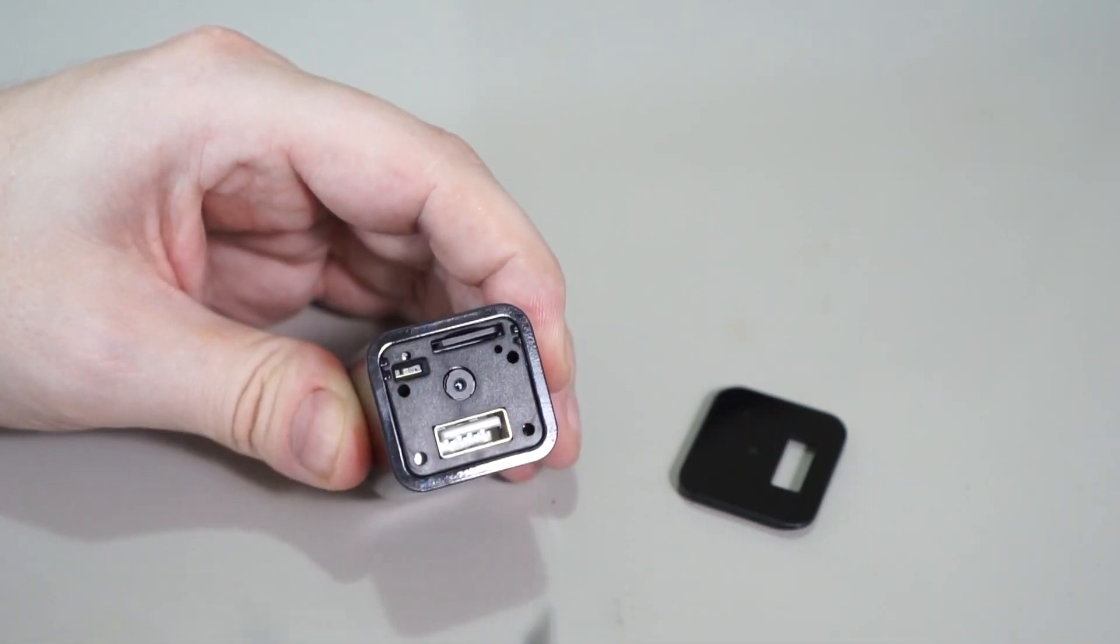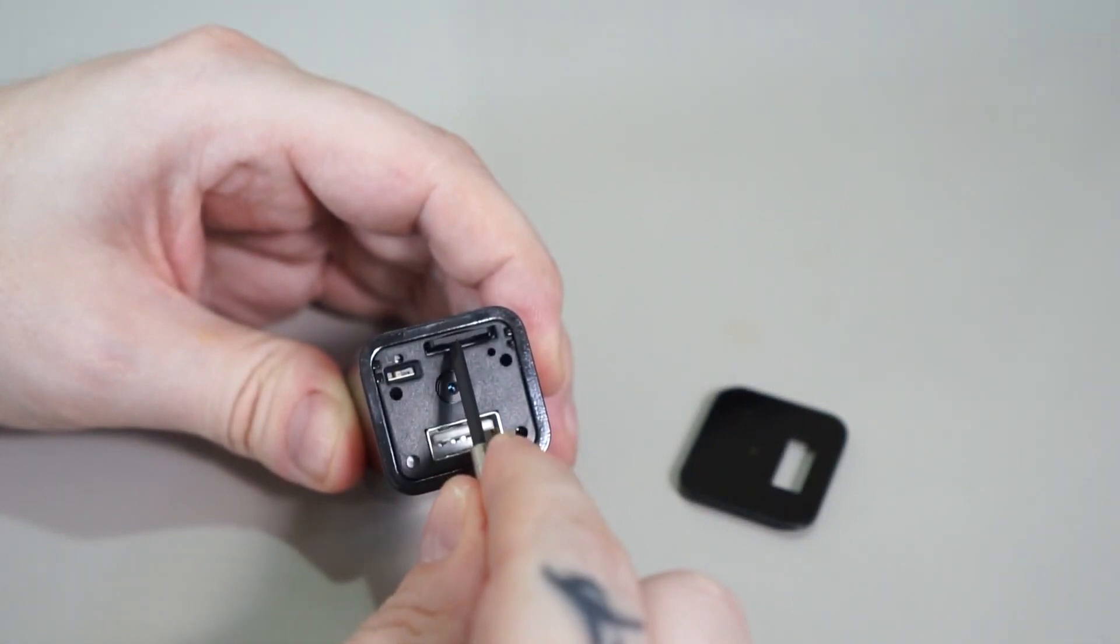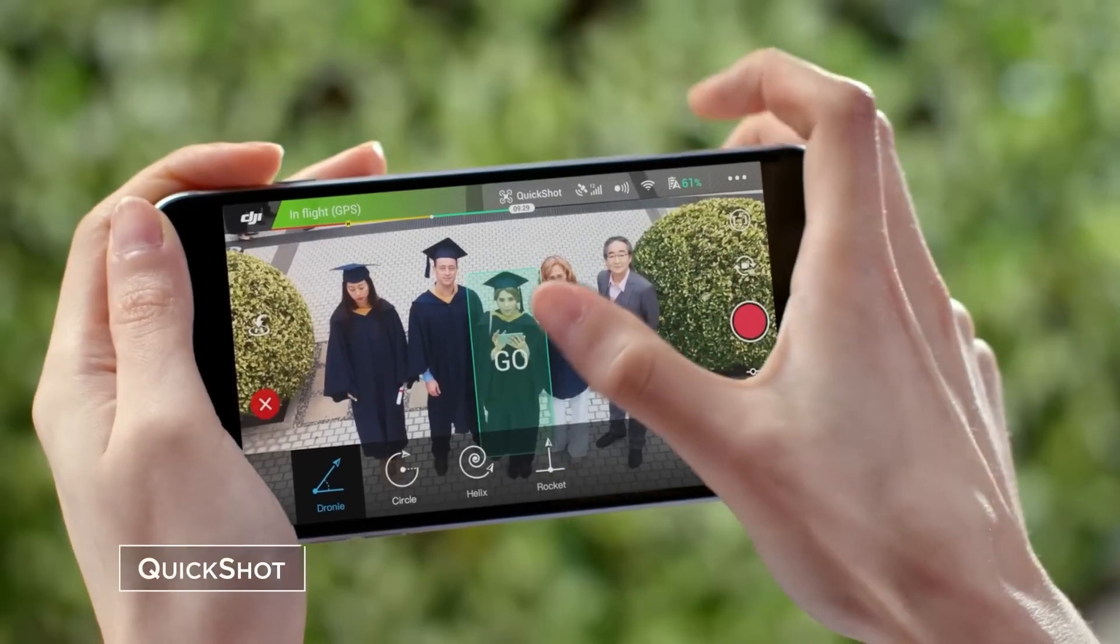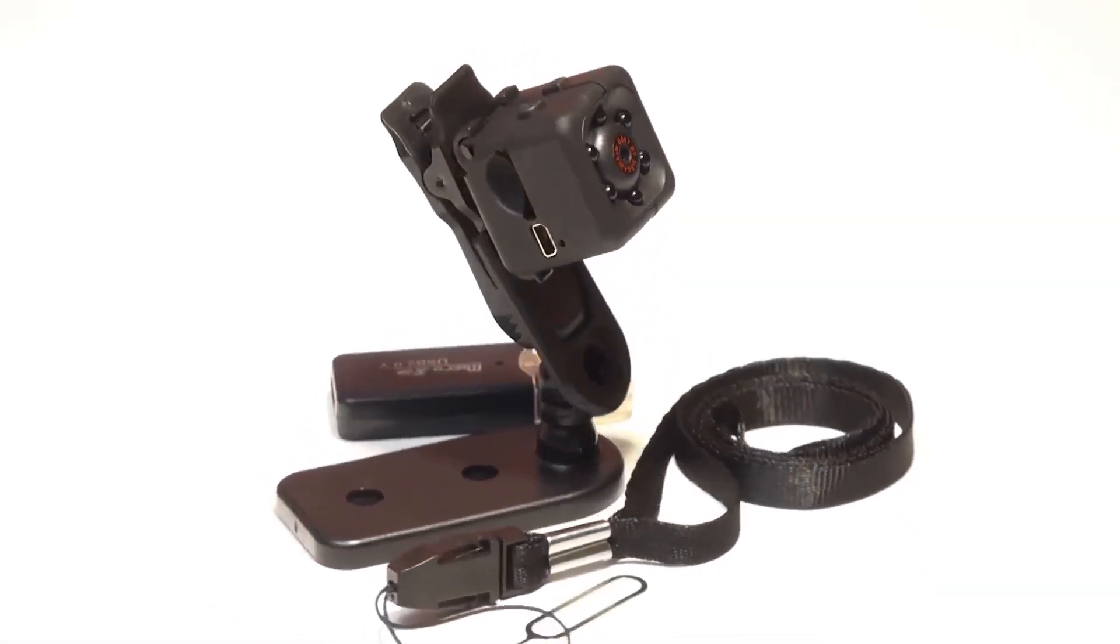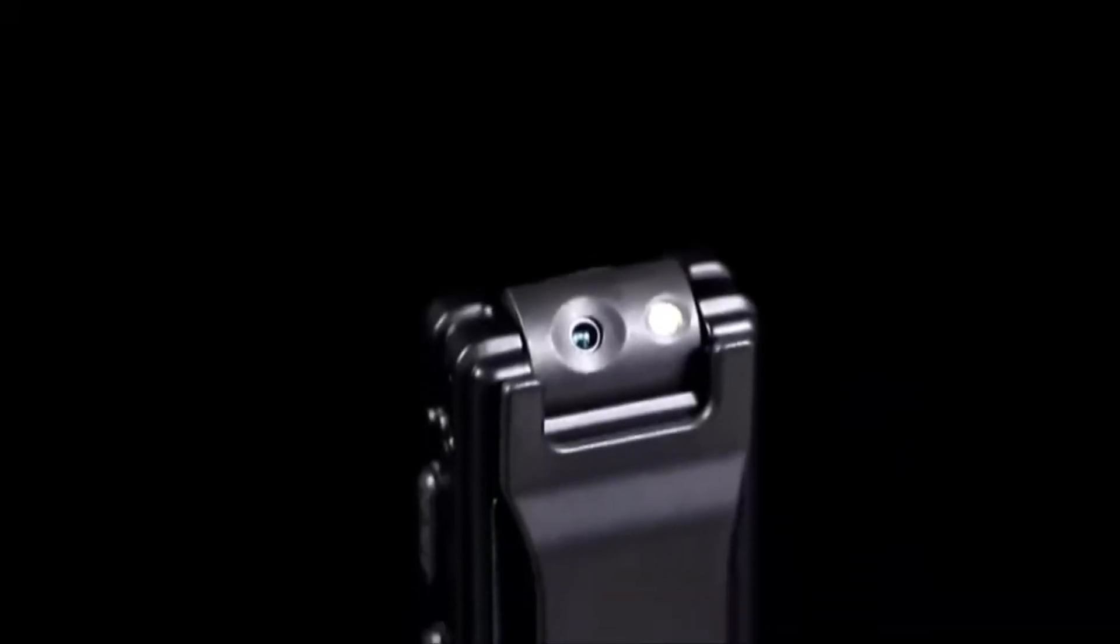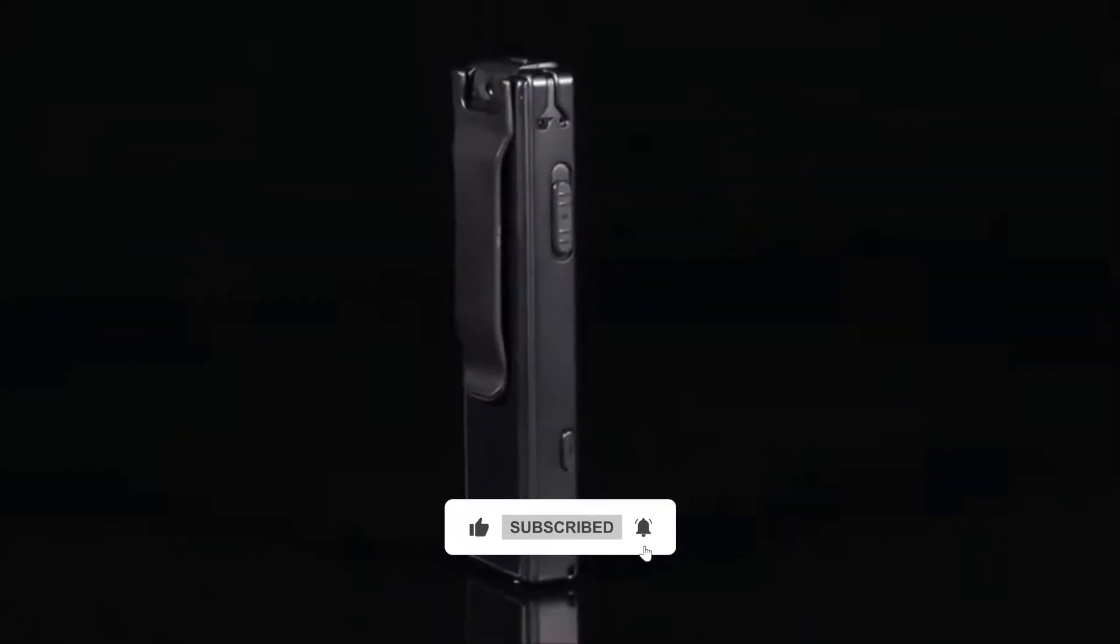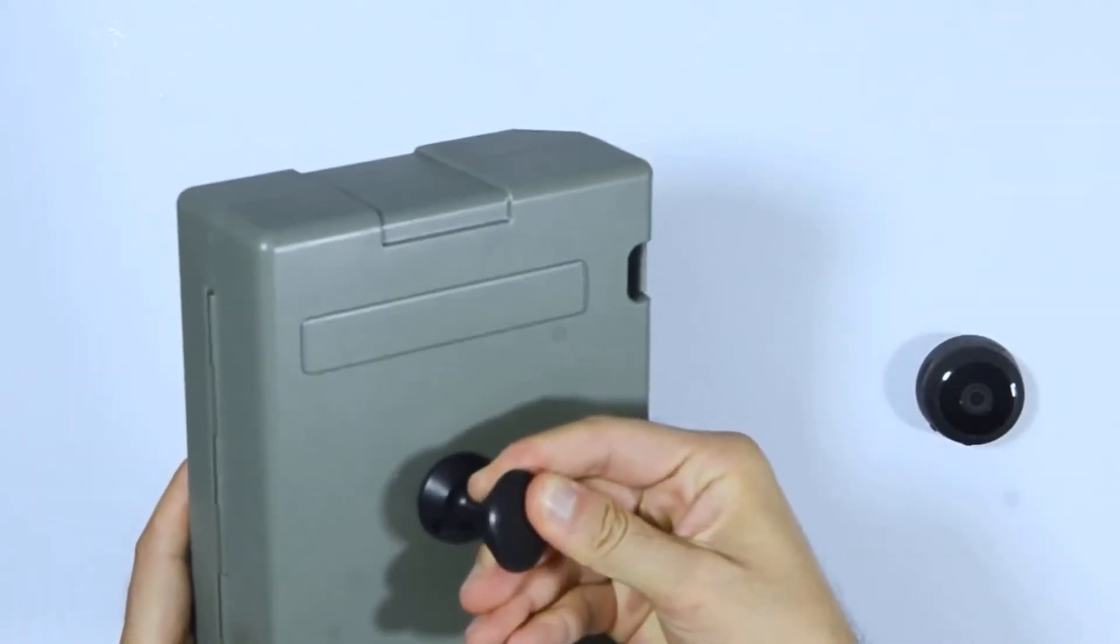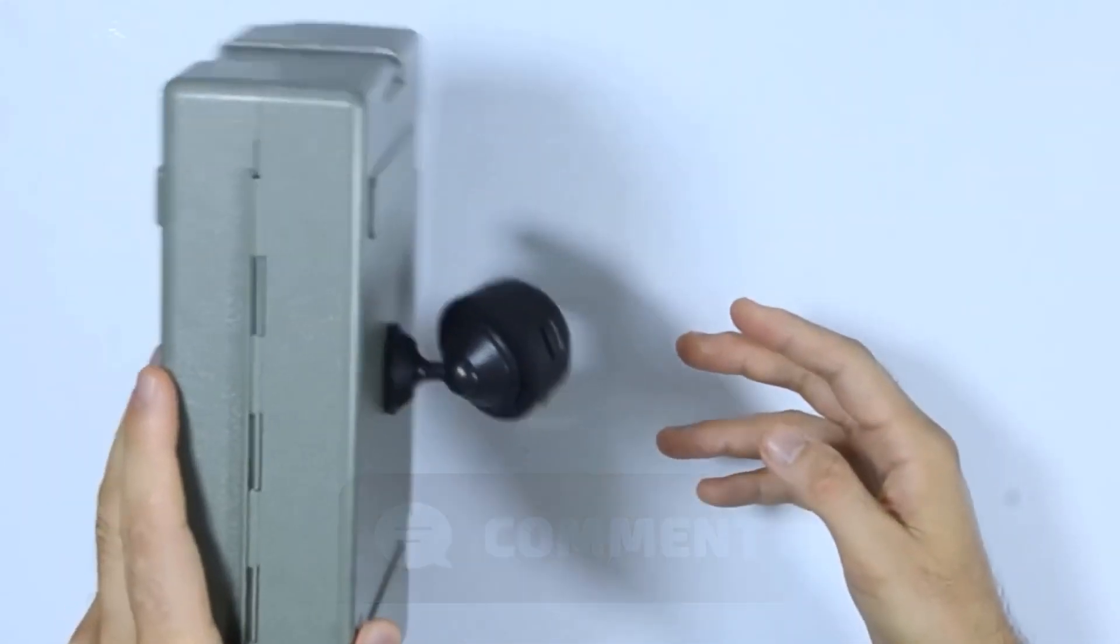That's a wrap on our rundown of the top 10 affordable spy gadgets you can find on Amazon. These devices are perfect for anyone looking to add a layer of security or just have some fun with spy tech. Check out the links in the description to get your hands on these gadgets. Don't forget to like, subscribe, and hit the bell icon for more videos like this. Have any questions or want to see more content like this? Drop a comment below. Until next time, keep those secrets safe.